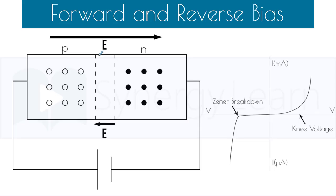Forward and reverse bias of PN junction diode. When the positive terminal of a cell is connected to the P side and the negative terminal is connected to the N side, it is called forward bias.